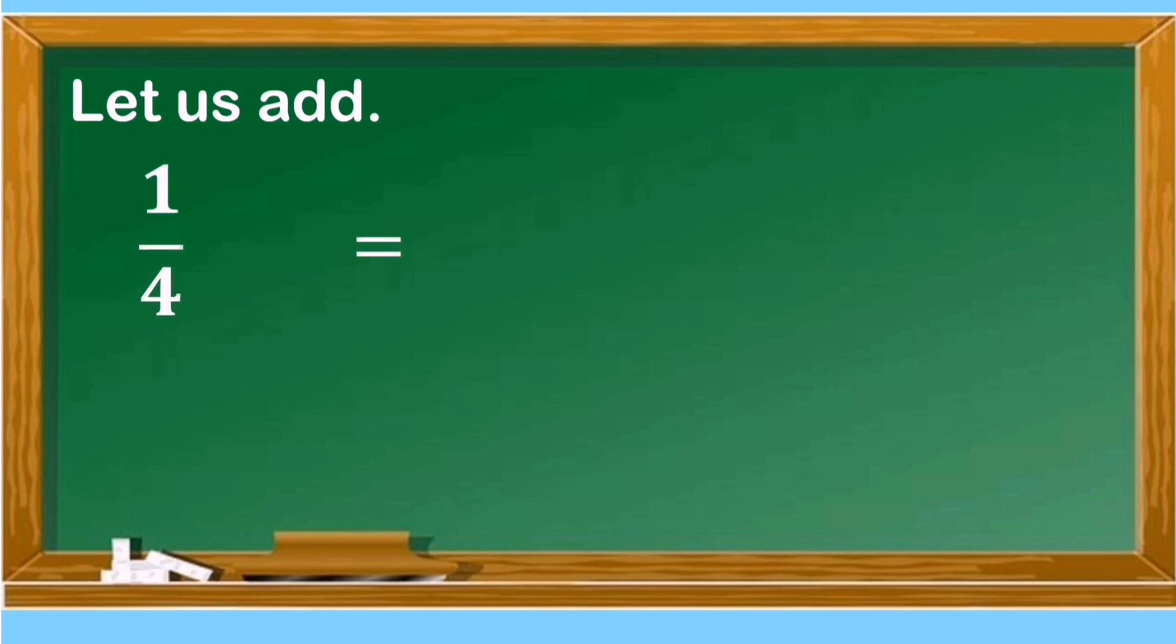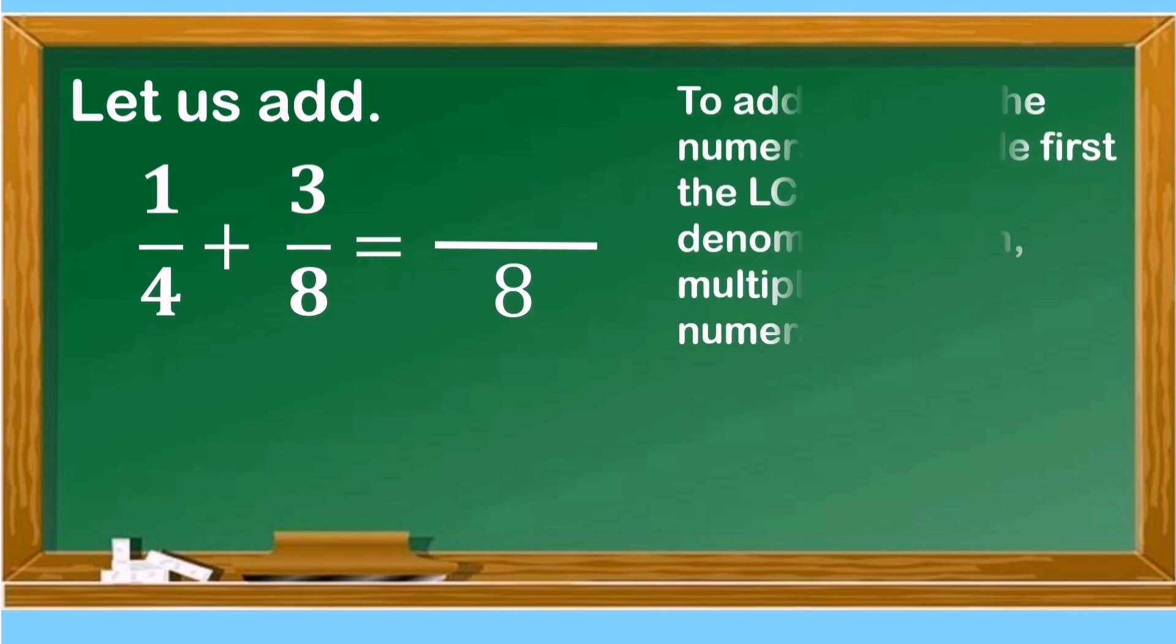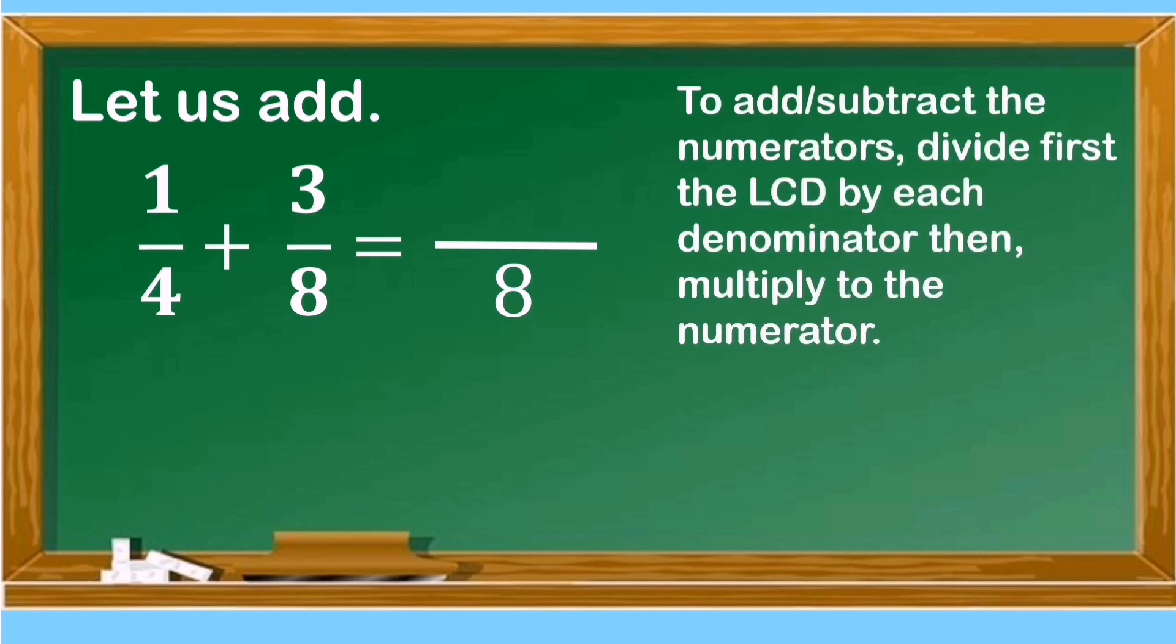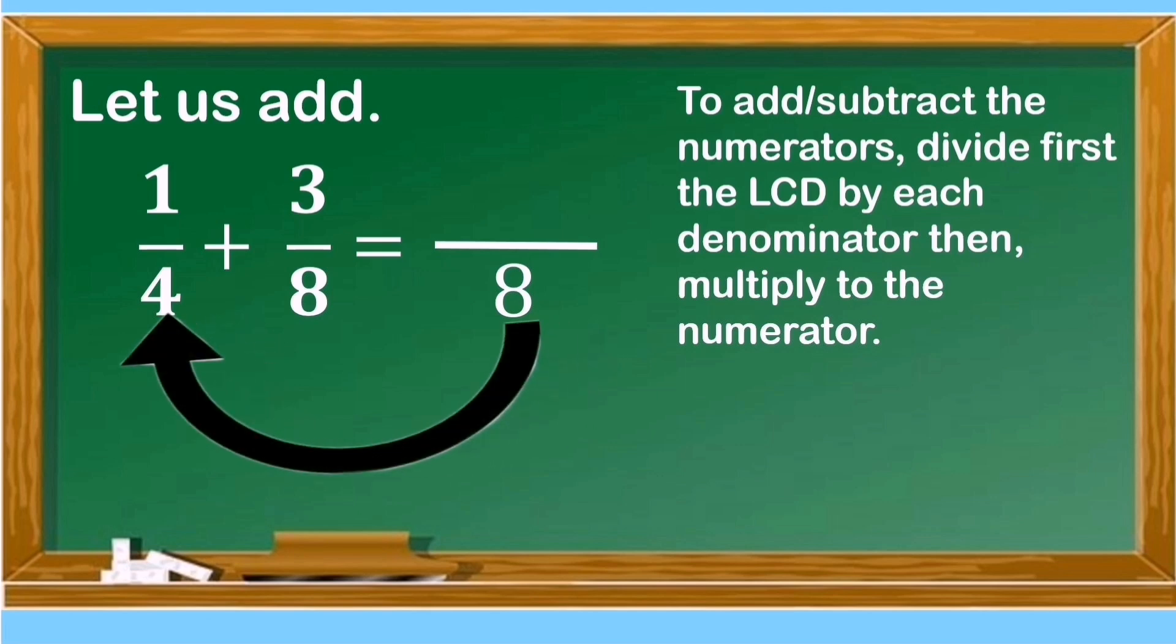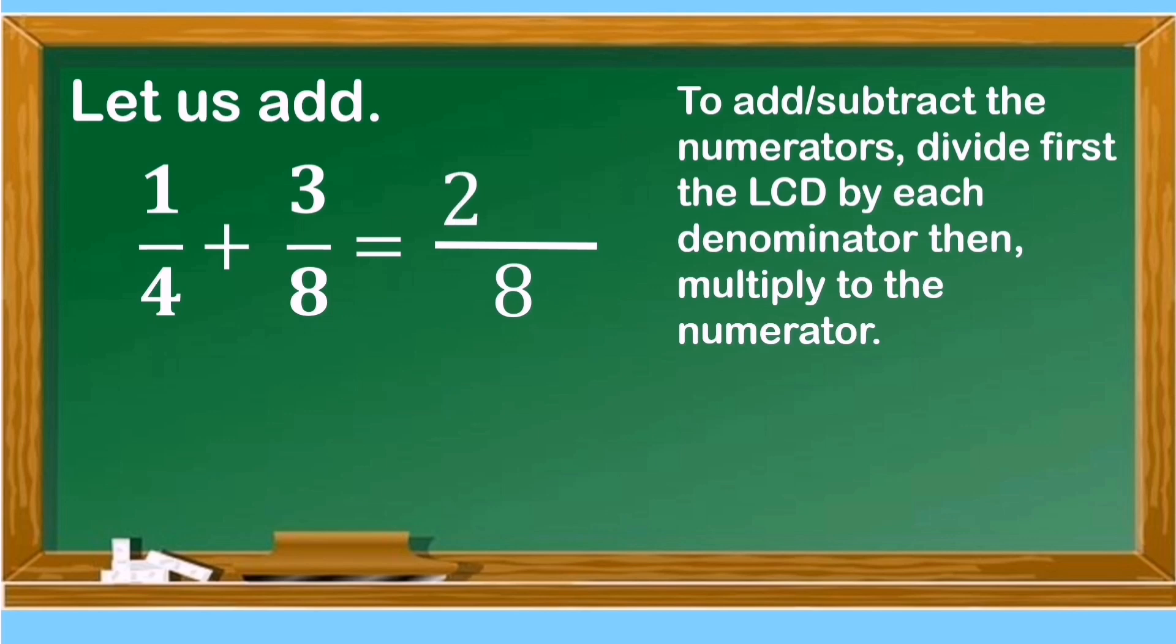Let us add 1/4 and 3/8. We already know that the LCD is 8. To add or subtract the numerators, divide first the LCD by each denominator, then multiply to the numerator. 8 divided by 4 is 2 times 1 is 2. 8 divided by 8 is 1 times 3 is 3. We can now add the numerators. 2 plus 3 is 5. The sum of 1/4 and 3/8 is 5/8.